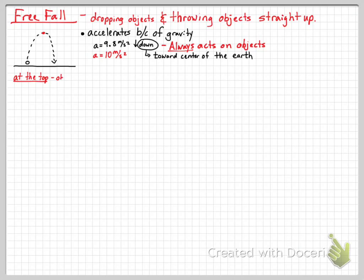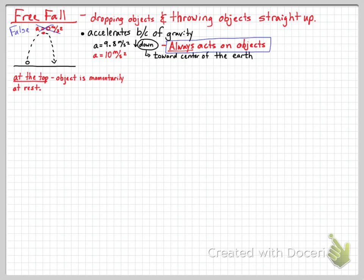Now let's address a major misconception. If we throw a ball straight up and it comes straight back down, the object at the top of the motion is momentarily at rest. Most people think that means acceleration equals zero at the top — and that is false. The object is always being acted on by gravity. When the ball reaches the top and stops, the acceleration is still 10 meters per second squared downward. The object has zero velocity but nonzero acceleration.